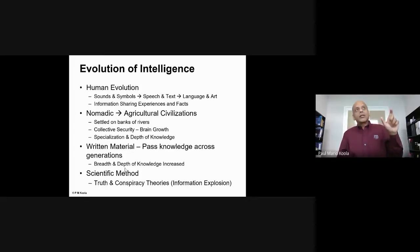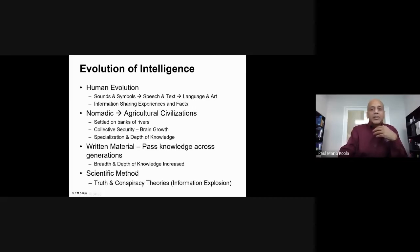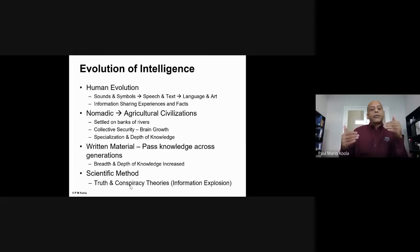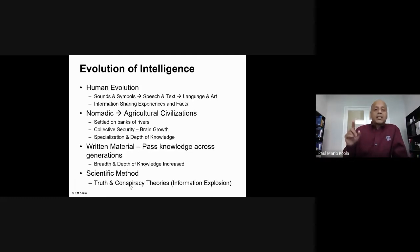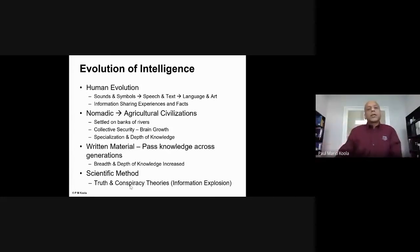Then the explosion happened — we started writing things down, passing knowledge across generations. The breadth and depth of knowledge increased. We no longer had to repeat everything from scratch. Finally, we come to the scientific method. Truth: my daughter corrected me when I said truth is relative — she said truth is absolute. In science, we try to get closer to that truth through observation and repetition. A hypothesis that withstands disproof is considered the scientific truth.